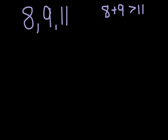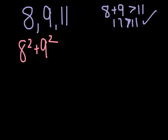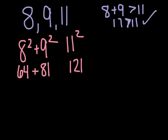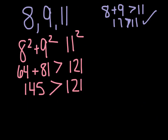Here's another example. We've got side lengths 8, 9, and 11, and we're wondering does a triangle result and if so, what type? Testing first: the two shorter sides add to 17, which is greater than 11, so yes, we get a triangle. Now for the type: 8 squared plus 9 squared compared to 11 squared. 8 squared is 64, 9 squared is 81, and 11 squared is 121. 64 plus 81 is 145, and that is greater than 121. So since the square of the two shorter sides is greater than the square of the third side, an acute triangle results.